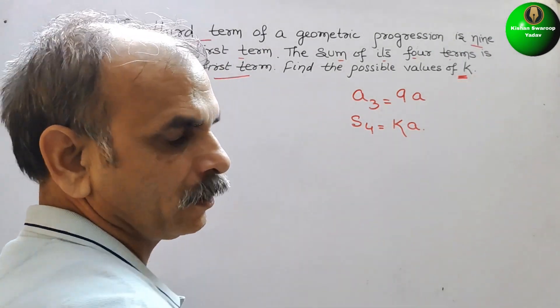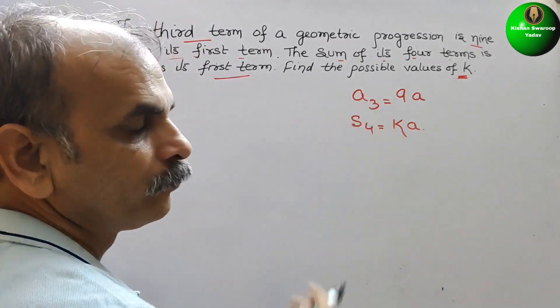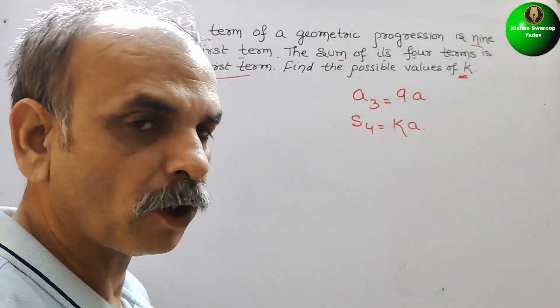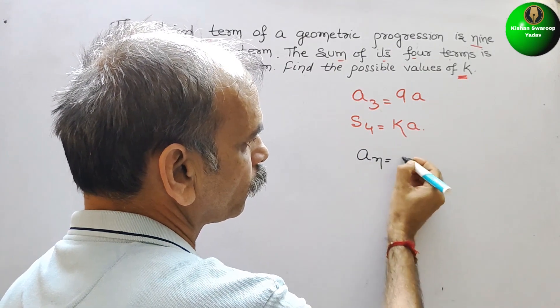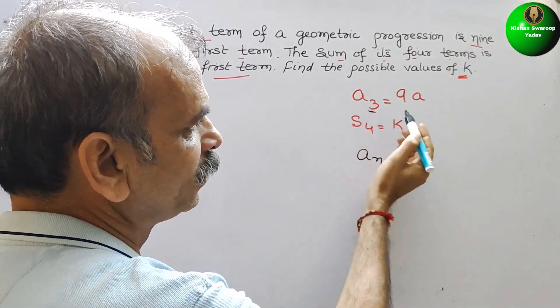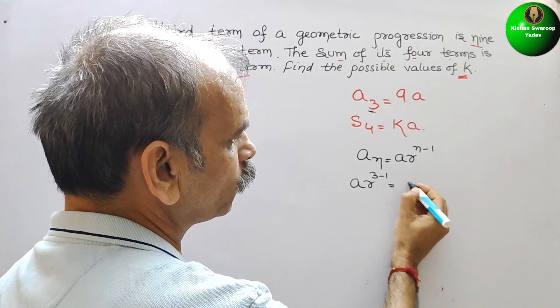So we will try to solve this, then we will get the possible value of k. So see that, first one, a₃. So what is your formula for that? aₙ is equal to arⁿ⁻¹. So here they have given 3, n is 3. So we will get ar³⁻¹, that is equal to ar². This is equal to, we can say, it's 9a.